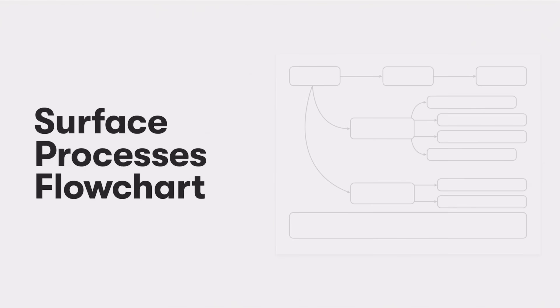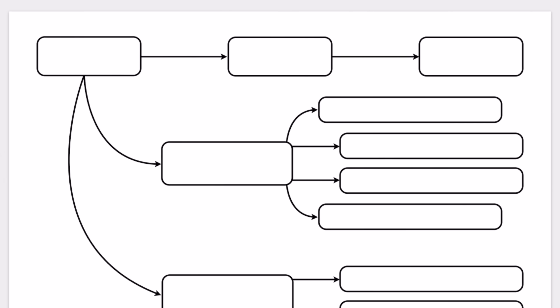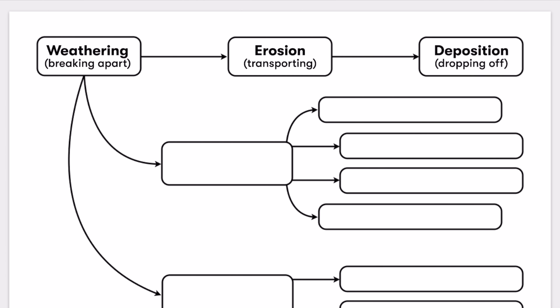To summarize this and some key ideas, we're going to use this surface process flowchart, which is available on the website. We'll fill in the three boxes on the top: starting with weathering, which is the breaking apart of rock; then erosion, which is the transportation of sediments; and finally, deposition, or the dropping off of those sediments.